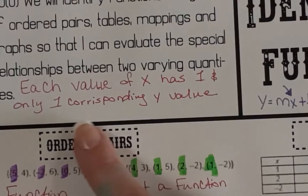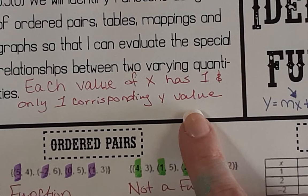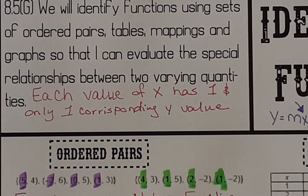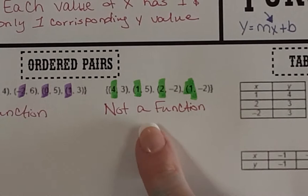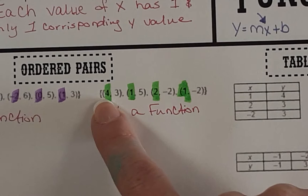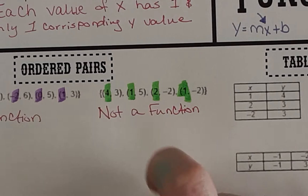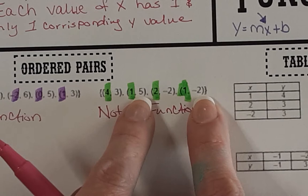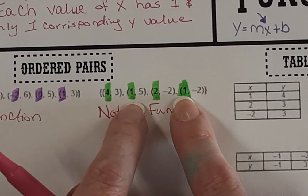The reason this is not a function is because each value of x has to have one and only one corresponding y value. It's easiest to think about this as a soda machine. If you go to the soda machine, put in your money, press the button for Coke, and get a water, that machine is not functioning. If you push Coke and get a Coke, it is a functioning machine. A quick way to check is to look at your x values and see if any repeat, then check if the y values on those repeats are the same or different.